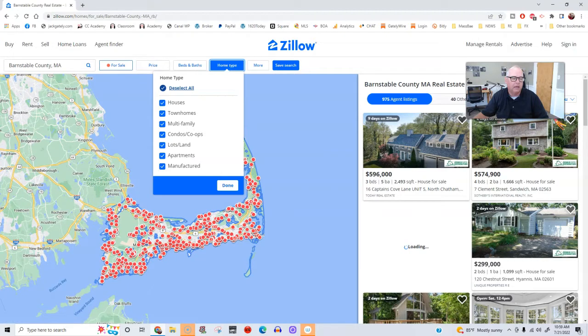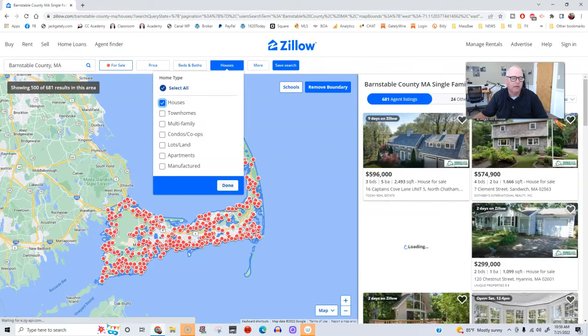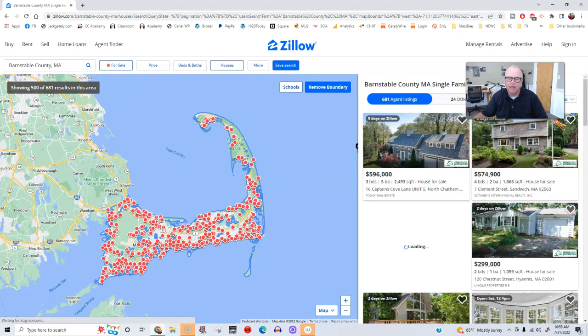And let's go up to home type and click houses, houses only. All right. So we don't want condos, multifamily, no. We're going to go to our single family homes.